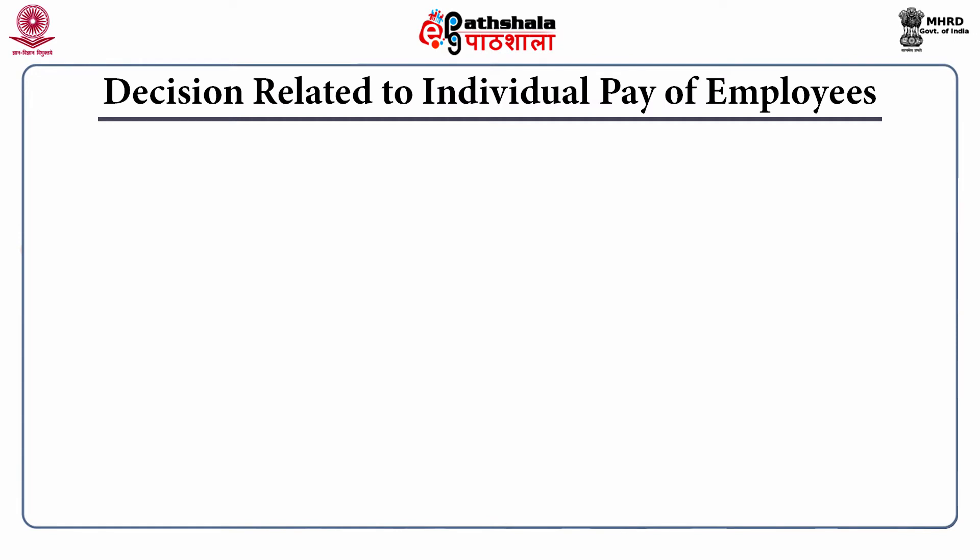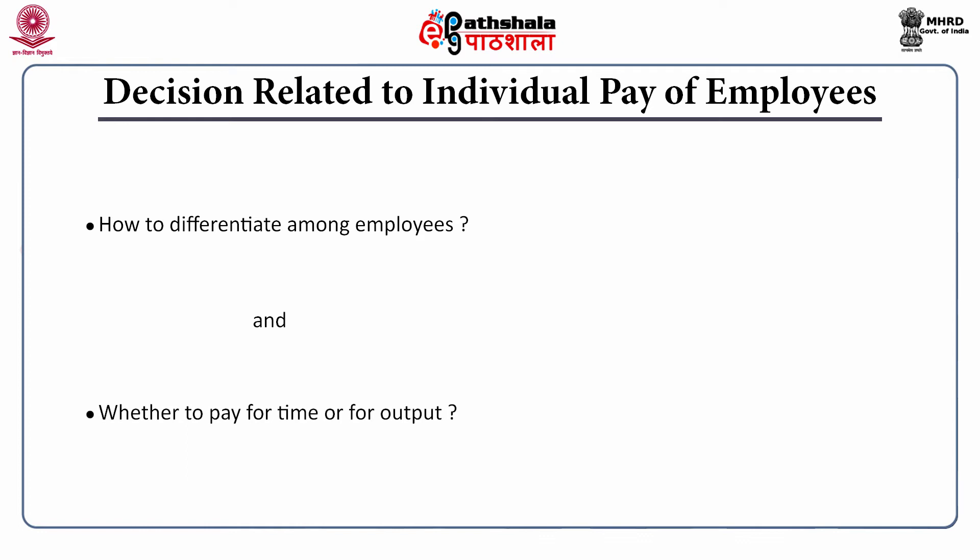An important decision relates to the individual pay of employees. When there is a system of same pay for the same job or position, the decision is simple. But when there can be differences between the pay of two employees at the same level, two decisions must be taken: first, how to differentiate among employees; and second, whether to pay for time or for output. The first level is individual pay determination, where take-home salary and benefits are decided, and the second is the pay method decision.